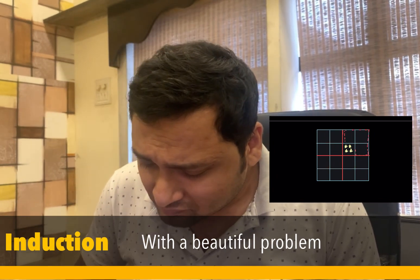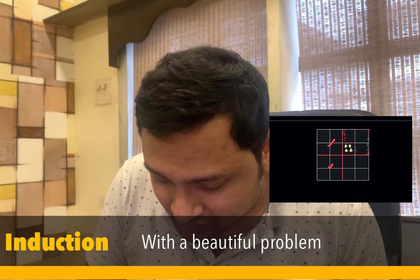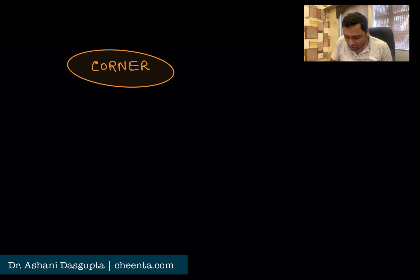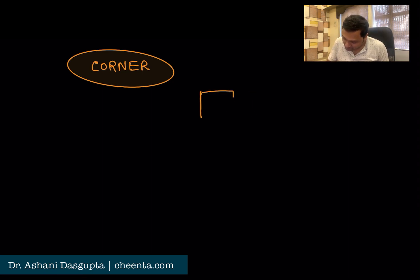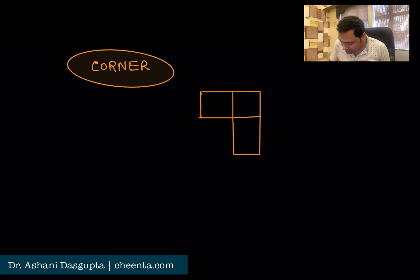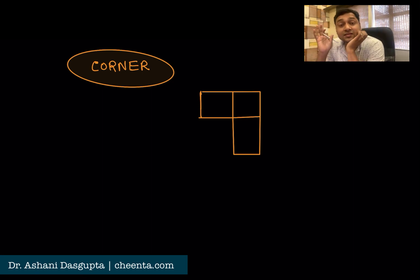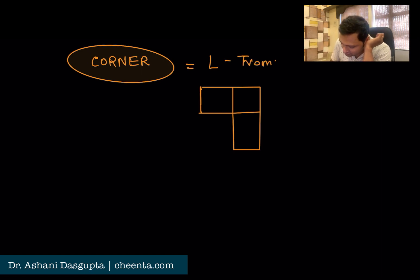This problem starts with something called Corners. What is a corner? A corner is a Tromino — it looks like three boxes arranged in an L-shape. Sometimes this is known as a corner, and sometimes it is known as an L-Tromino.